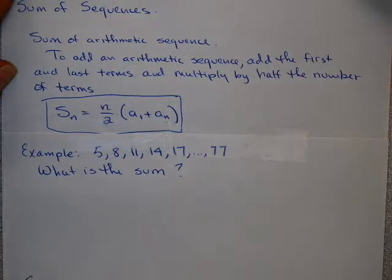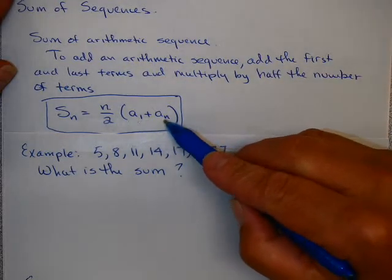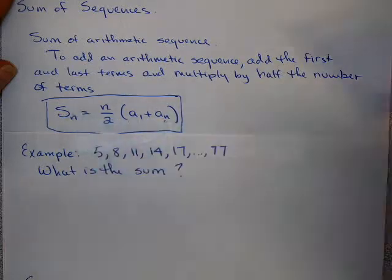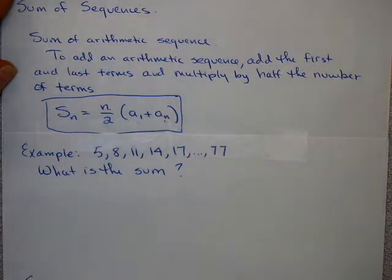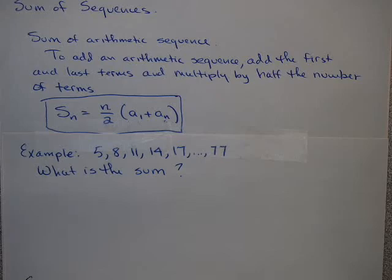In particular, the sum of an arithmetic sequence is as follows. To add an arithmetic sequence, add the first and the last terms, and then multiply by half the number of terms. That will give you the sum of the sequence.